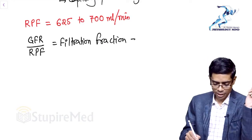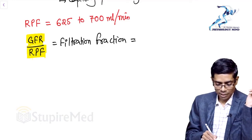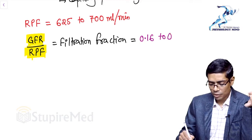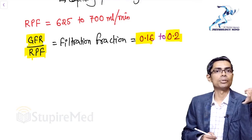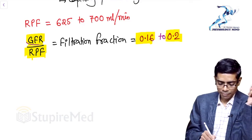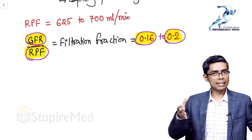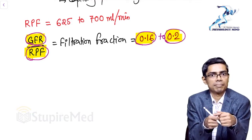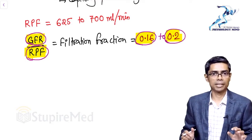Taking the ratio of GFR to renal plasma flow gives the filtration fraction — an important MCQ concept. Using normal values: 125 ÷ 625 or 125 ÷ 700 gives a filtration fraction of 0.16 to 0.2. This means GFR is 16–20% of renal plasma flow — only 20% of total plasma arriving at the glomerulus is filtered at any given time.